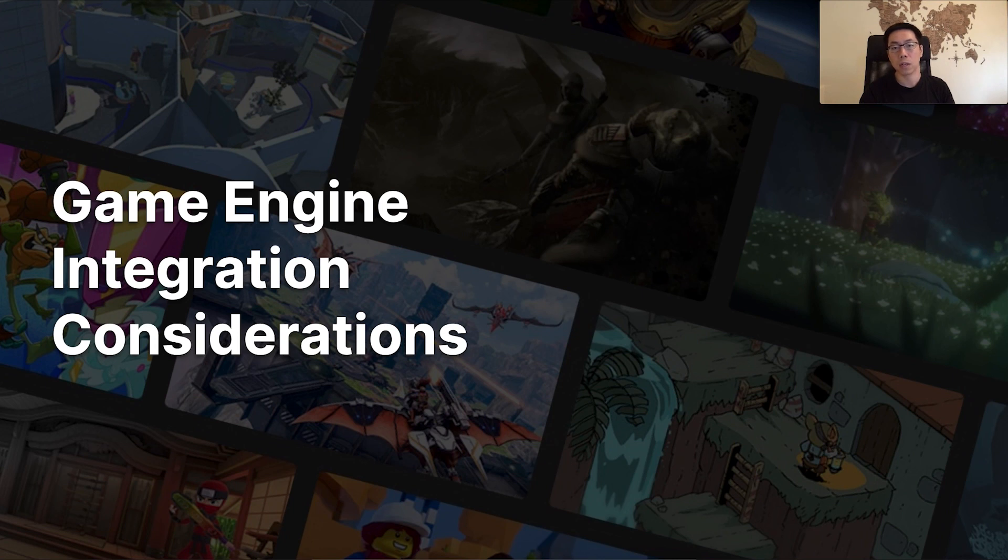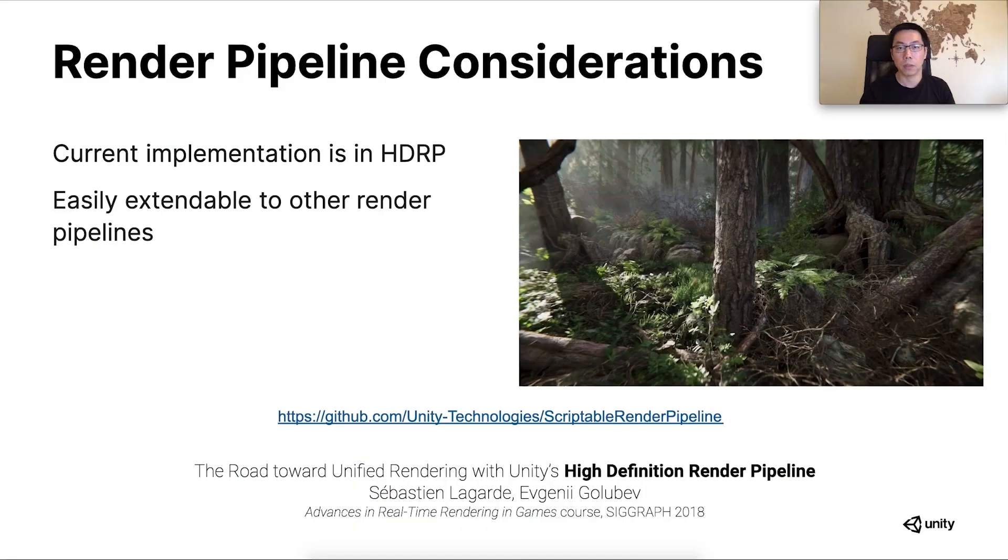Unity enables you to customize the render pipeline for your specific project needs. For our prototype implementation, we use Unity's own high-definition render pipeline. If you are interested in additional details about it, feel free to check out our GitHub repository or the slides of the previous talk. However, our implementation doesn't really rely on HDRP features. It should be easily extendable to other render pipelines as long as they have compute shader and indirect draw capabilities.